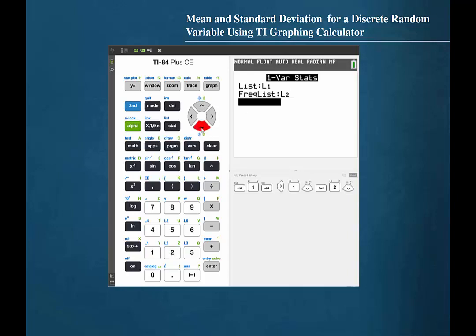Cursor down again to highlight CALC and press ENTER. The TI graphing calculator then gives us the mean as 1.45 and the standard deviation as 1.56444878.